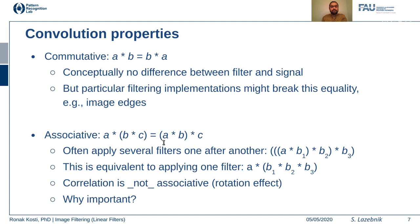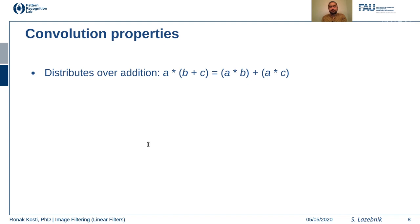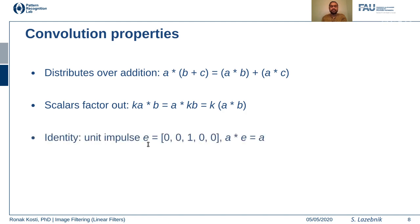A key difference between convolution and correlation is that correlation is not associative. Convolution is also distributive over addition and scales out scalar factors. It also has identity — if you convolve any signal with an identity function, you get back the original signal.